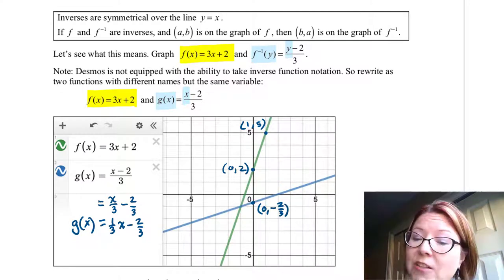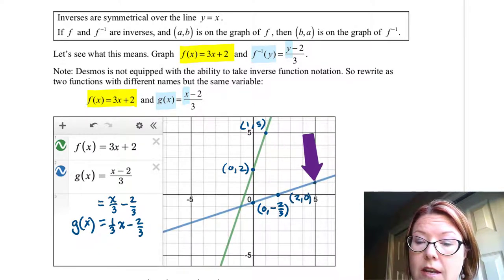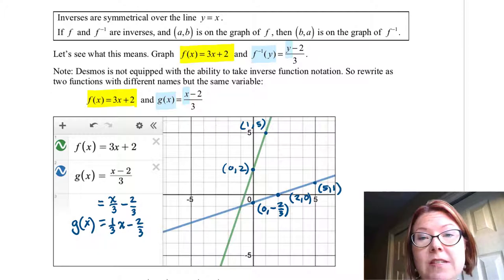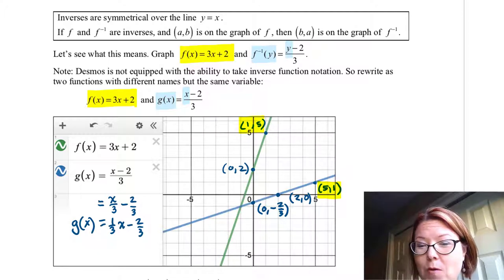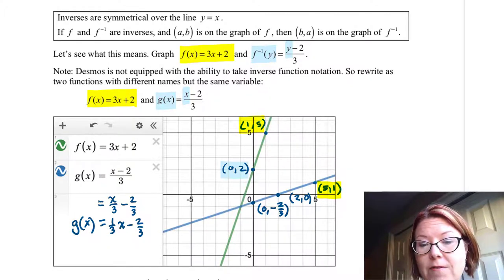It looks like it also passes through (2, 0) and (5, 1). Now we can already see this property where we have points where the x and y coordinates are reversed. For example, the point (1, 5) on f corresponds to the point (5, 1) on g. The point (0, 2) on f corresponds to the point (2, 0) on g.